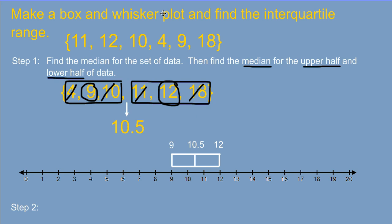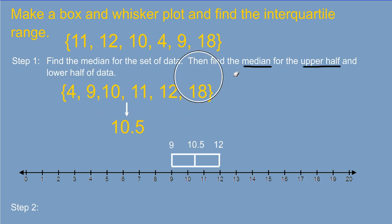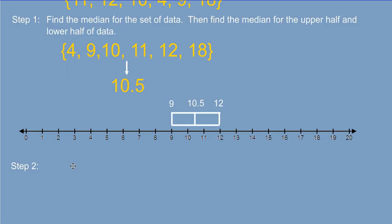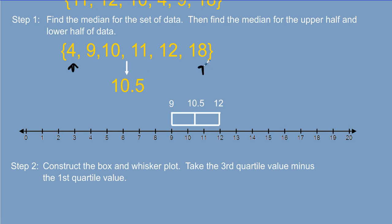Next, we need to add the whiskers. In order to add the whiskers for this, and this says to construct the box and whisker plot, to add the whiskers, we're just looking for the lowest value in the set of data, which is 4, and the highest value, which is 18. And we make a mark there and connect it with a line, 4 and 18. And now you've constructed your box and whisker plot.